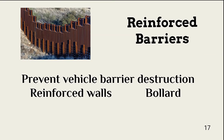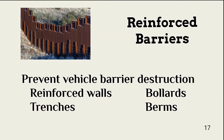Most organizations don't have to worry about intruders driving a vehicle through a perimeter barrier, but terrorist attacks over the past decades have shown that determined intruders will do whatever is necessary to successfully attack high-value targets. Reinforced walls are one way to protect human, facility, and information resources. Bollards, trenches, or berms external to and surrounding the perimeter barrier can also defend against vehicle intrusions.